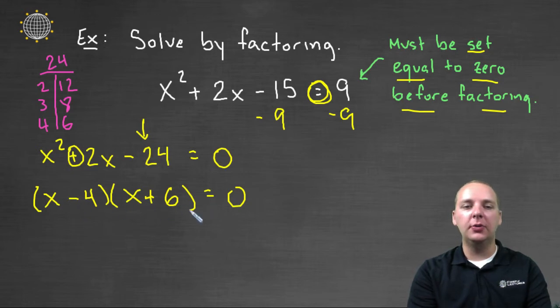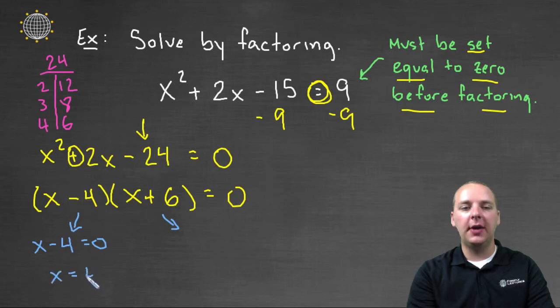If a product equals zero, then either this guy equals zero, or this guy equals zero. So we'll take x minus 4 and set him equal to zero, which will give us a solution of x being 4.